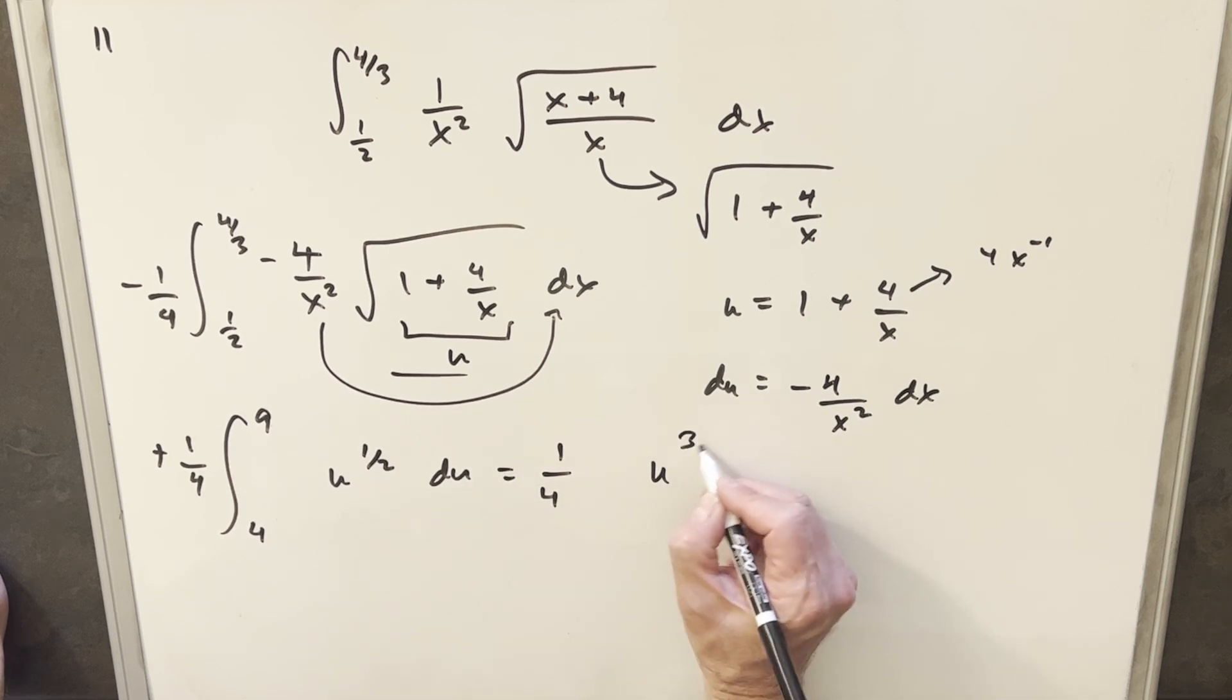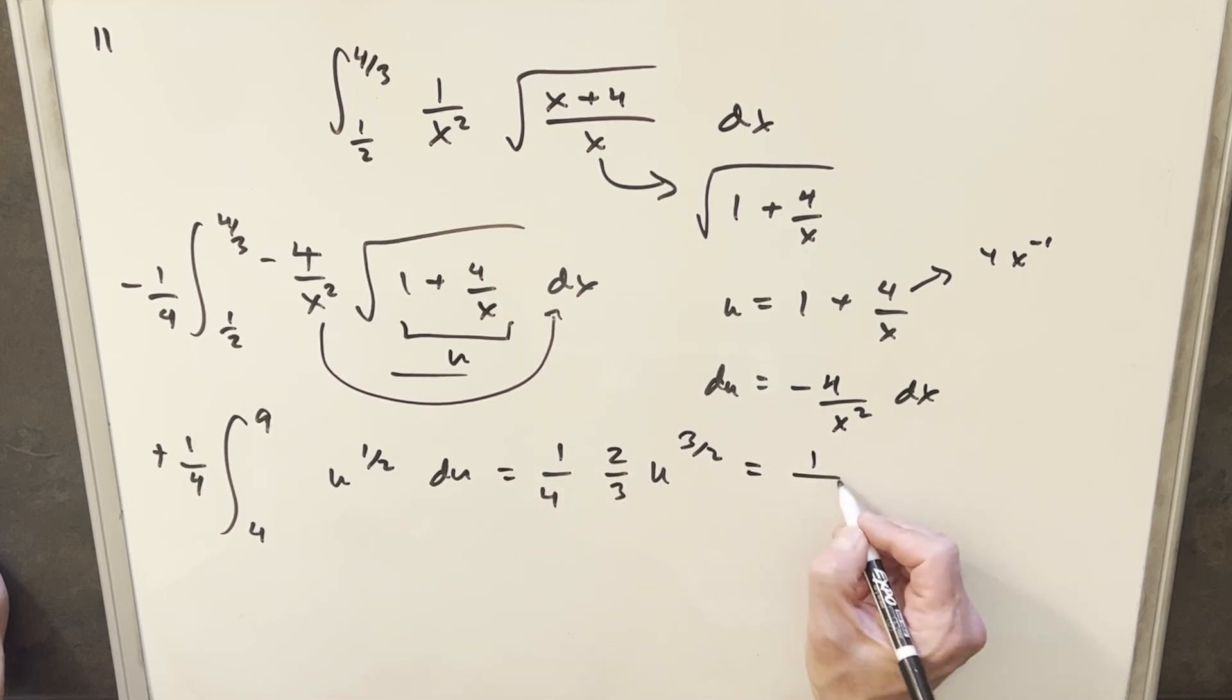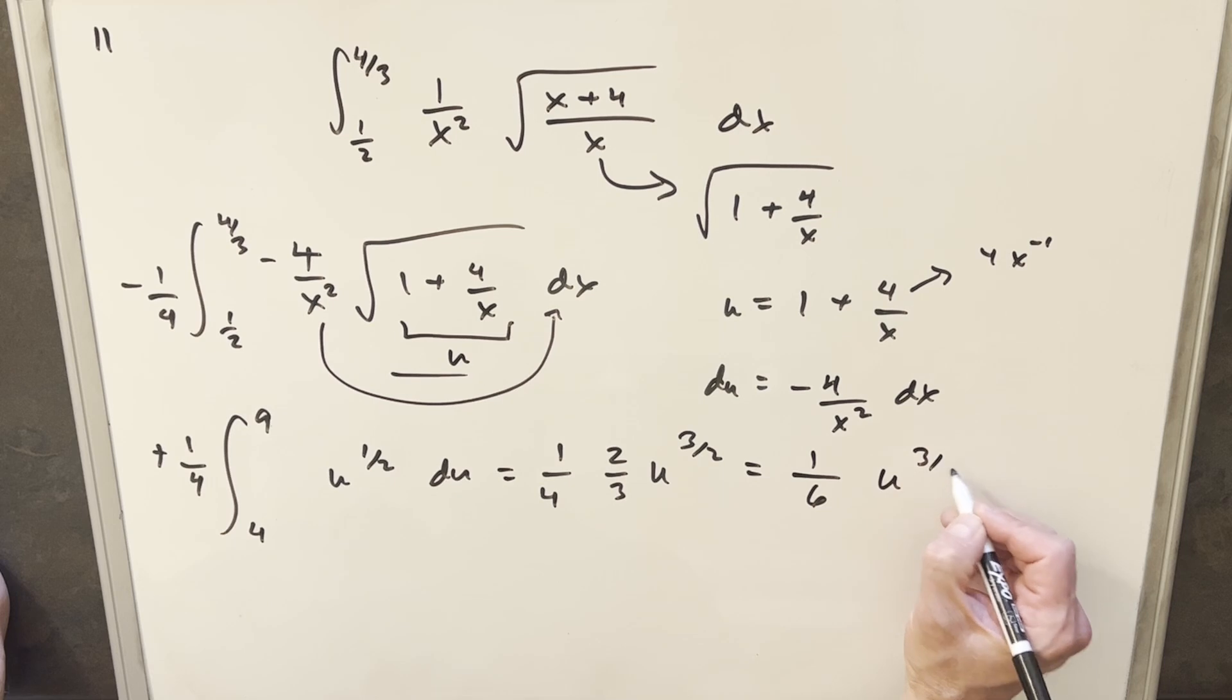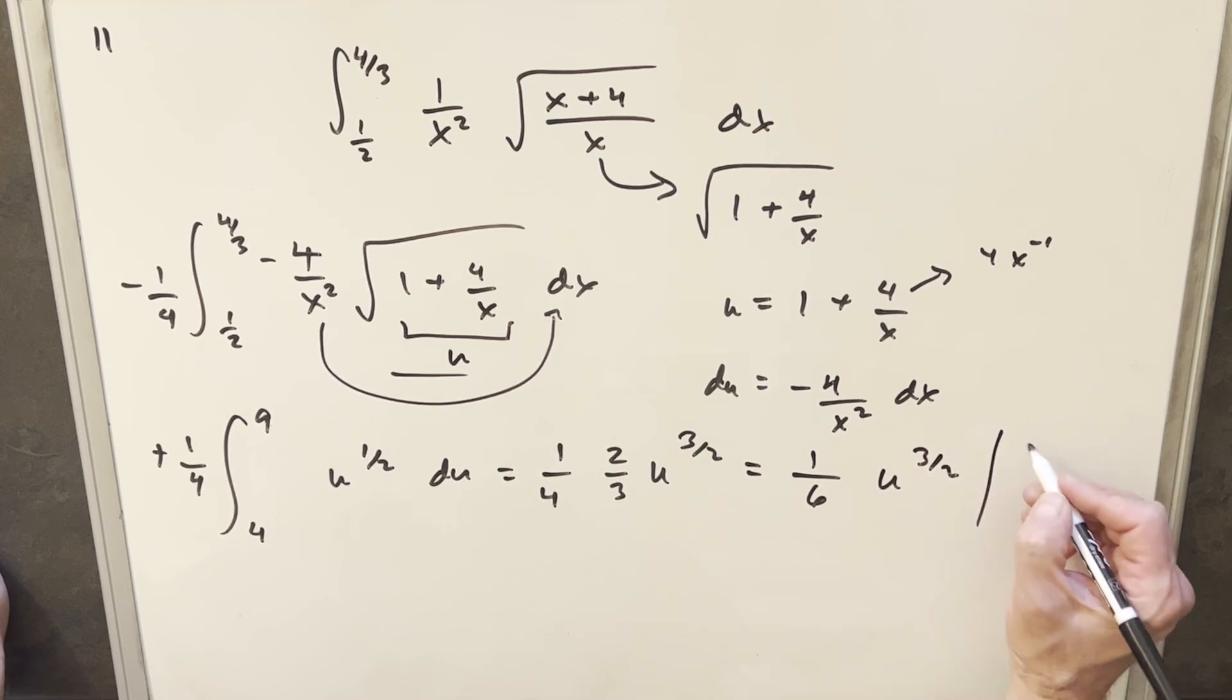So we're going to have u to the 3 halves. Put 3 halves in the denominator, we're going to have 2 thirds. Then we'll just multiply this out, and we're going to have 1 over 6, u to the 3 halves, and we're evaluating from 4 to 9.